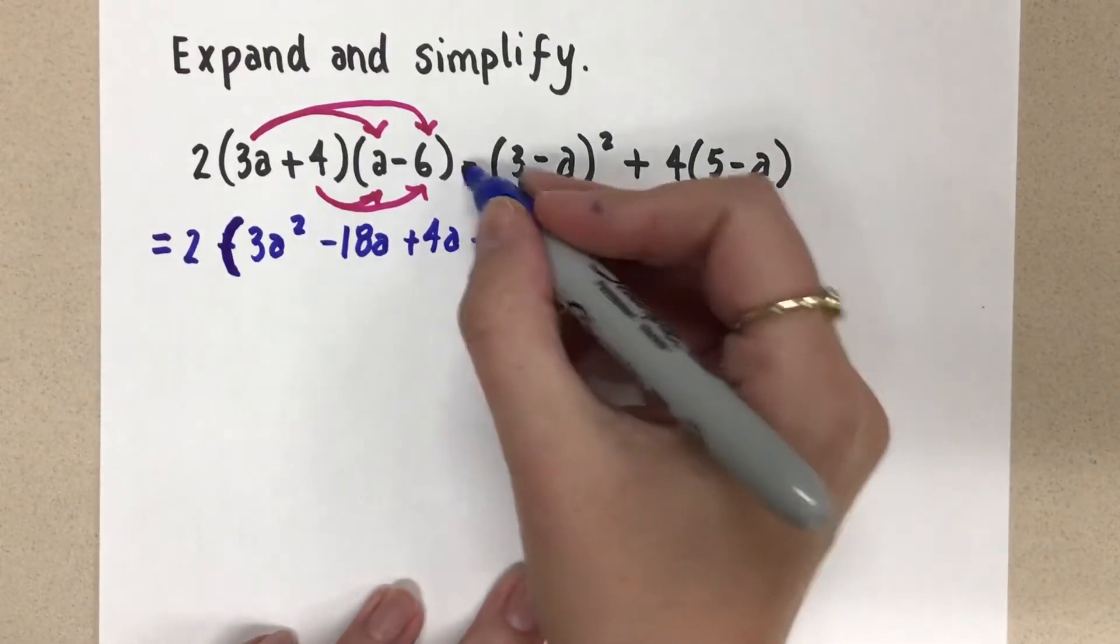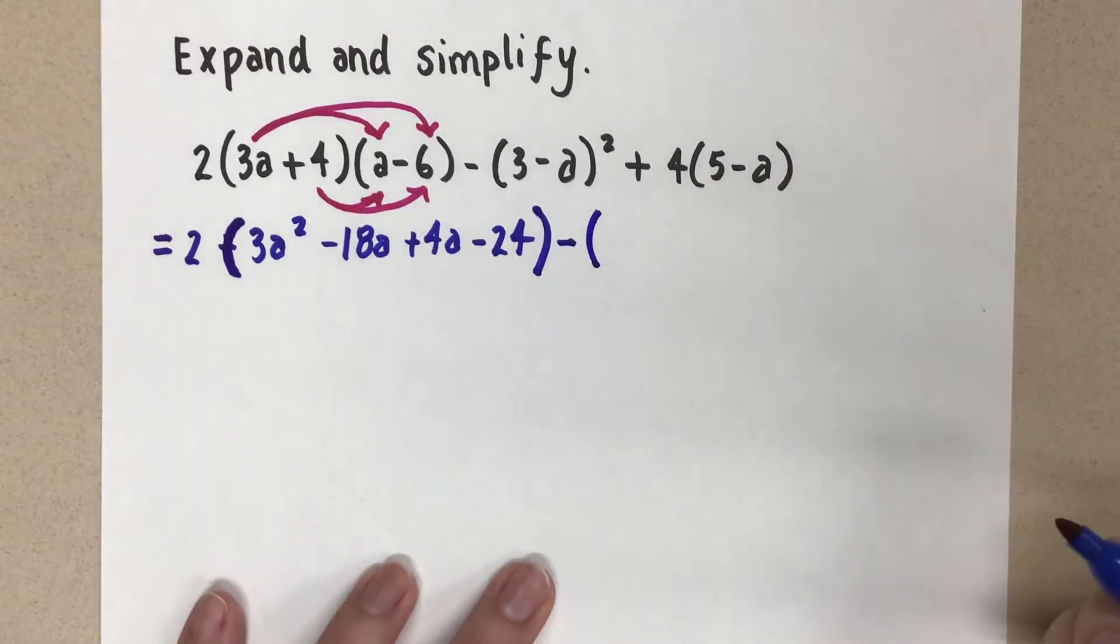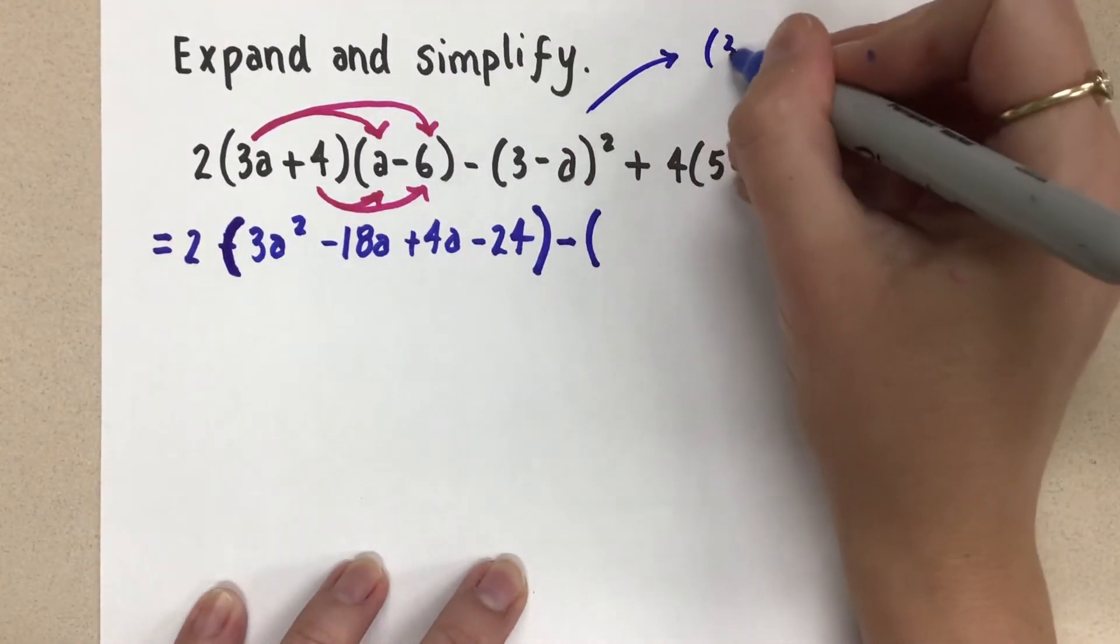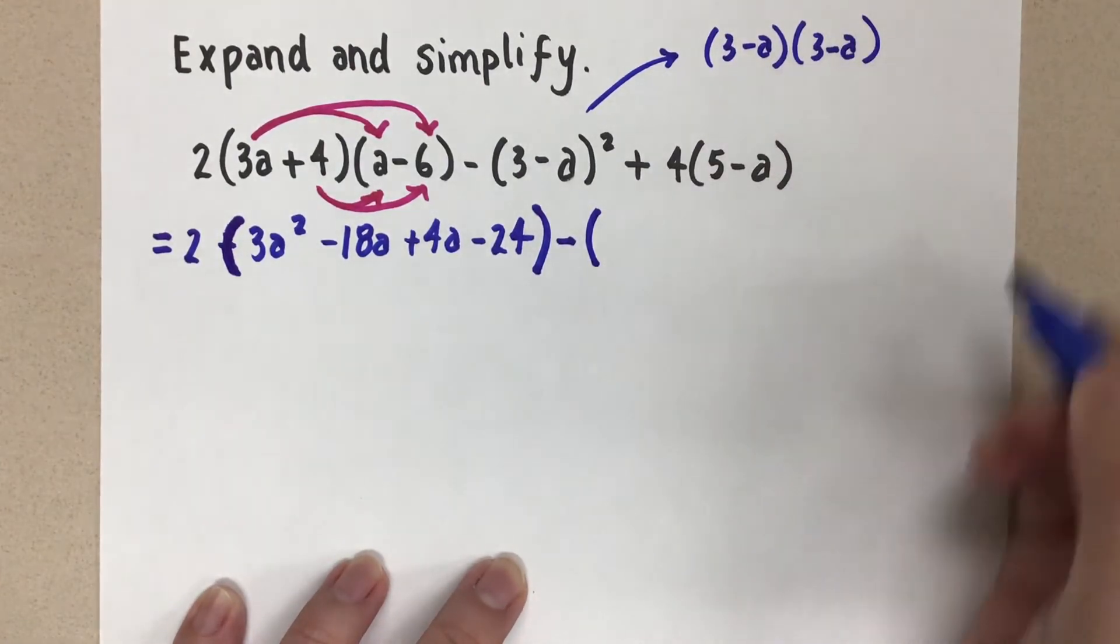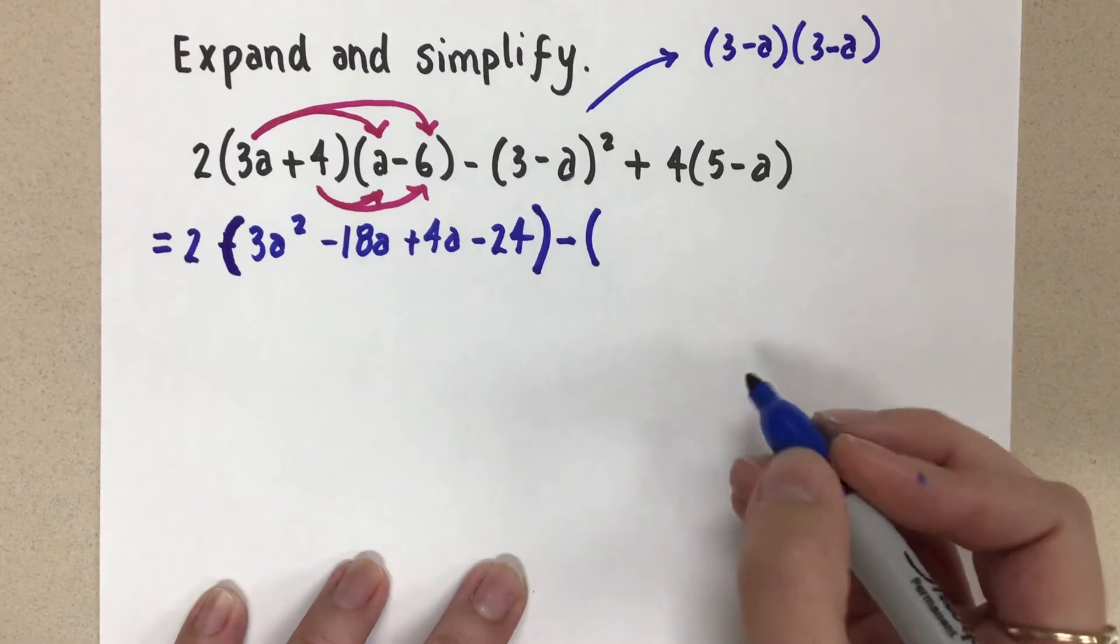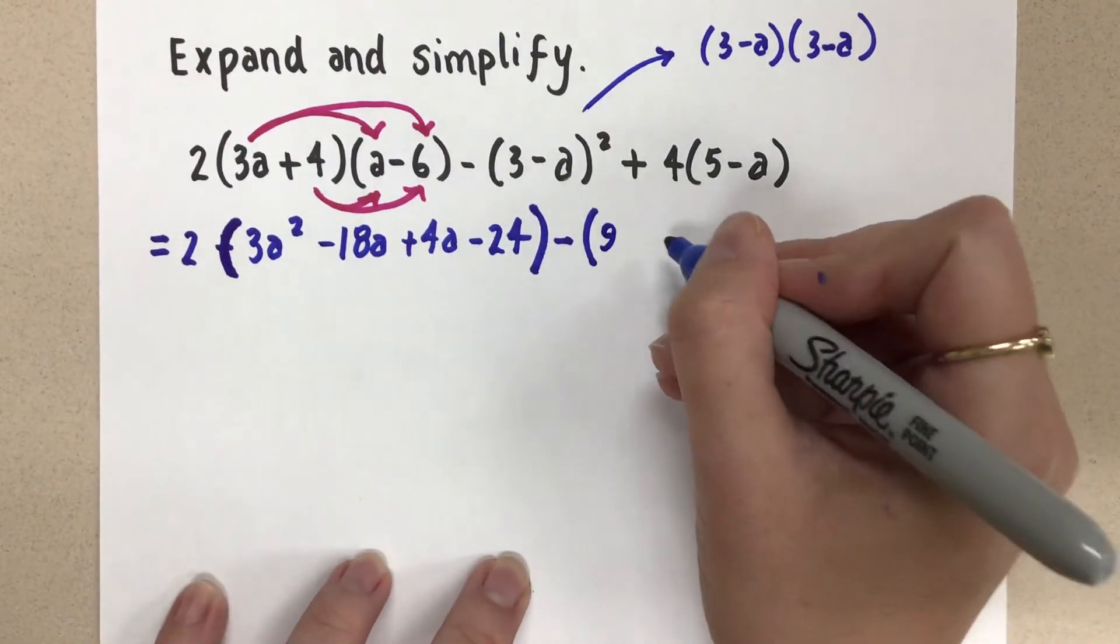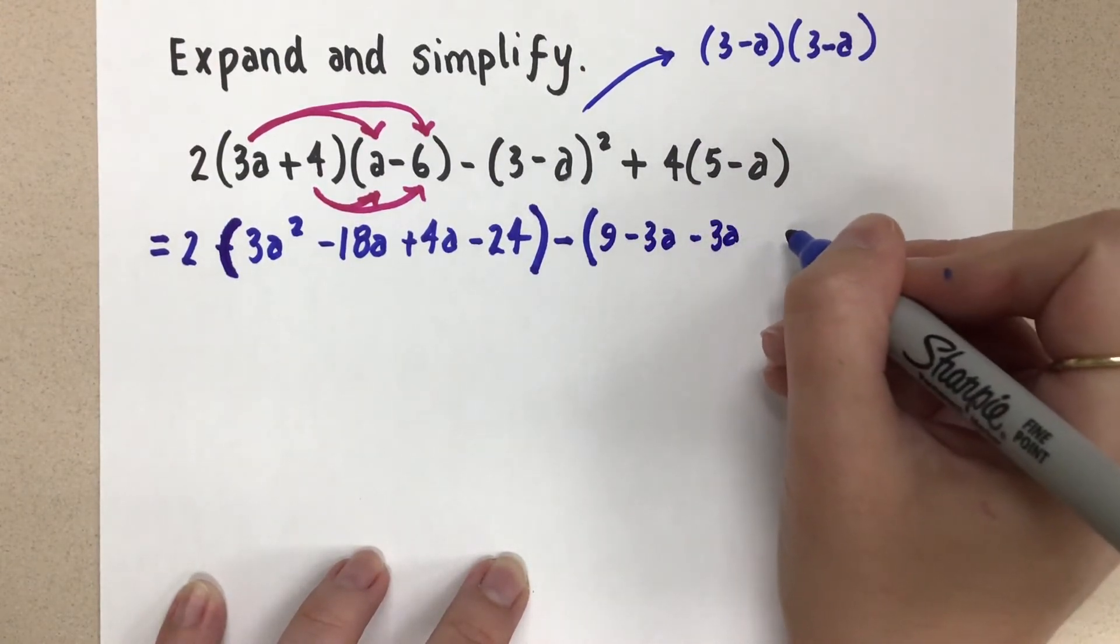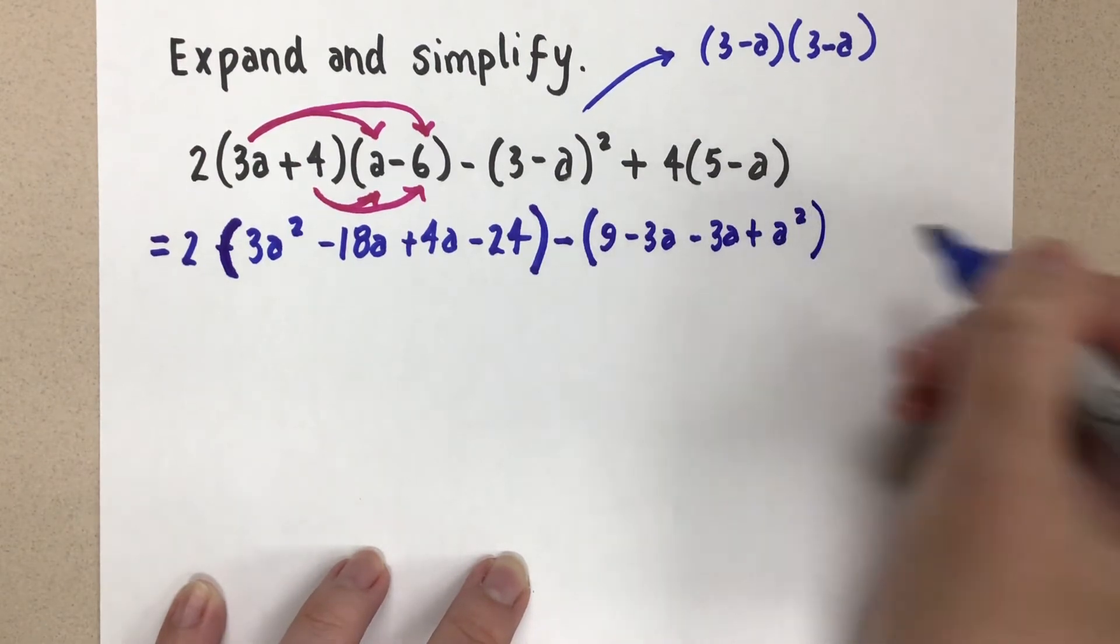Now let's do the next one. So we have the minus. We're going to put a bracket this time, and I'm going to make sure I don't make that mistake again. So this actually means 3 minus a times 3 minus a. Be careful. And now we're going to distribute in the same way. So 3 times 3 is 9. 3 times negative a is minus 3a. And then we have another minus 3a. And then negative a times negative a is positive a squared.